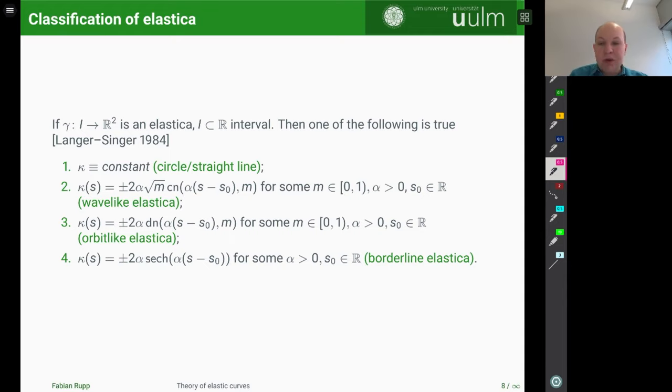So for instance, for case 2, we have the elliptic cosine here. And we have some parameters α, m, and s₀ running around. And then we have these three types of elastica. So the second guy is called a wave-like elastica. The third one is orbit-like. And the last one is borderline elastica, which you will see in a second why this name is justified. Don't worry, you don't have to remember the formulas. It's just to give you an idea how this equation can actually be solved explicitly. But what I want to do now is I want to look at the visualization of how these curves then look like if one integrates the curvature.